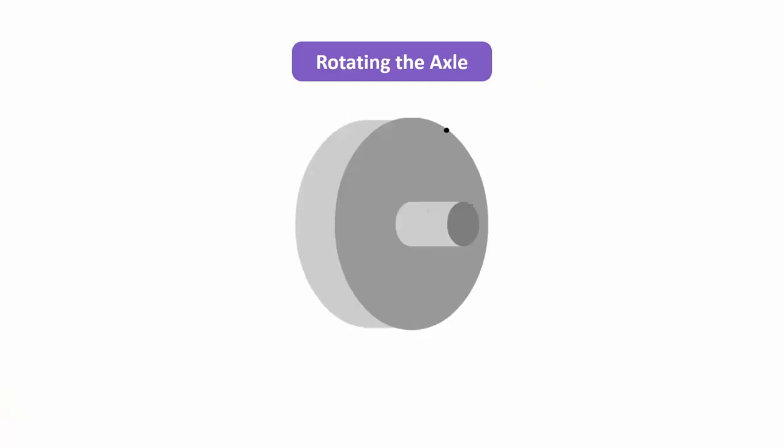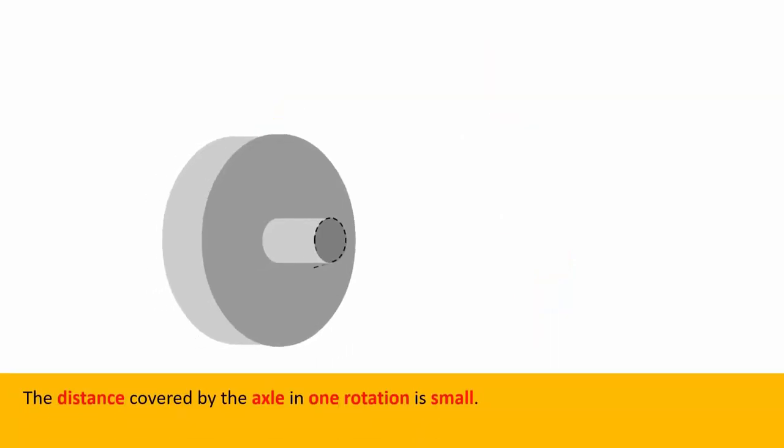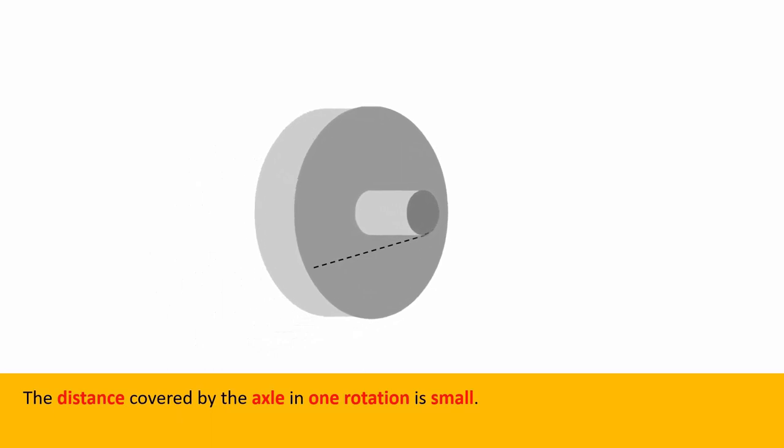Now, what if we turn the axle instead of the wheel? Consider this wheel with this axle attached to it. When the axle completes one rotation, the wheel does as well. But when the axle completes one rotation, the distance covered is small as the axle's diameter is small.